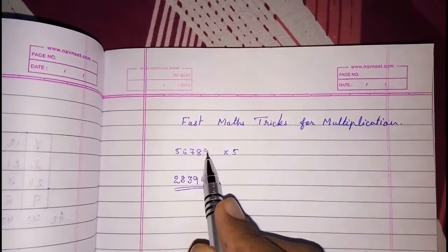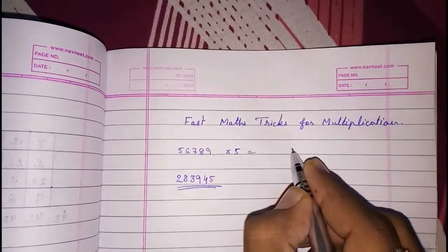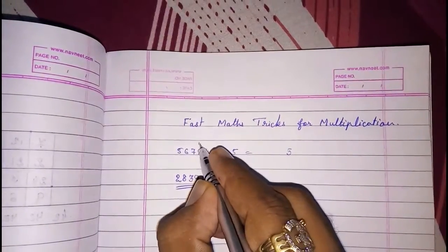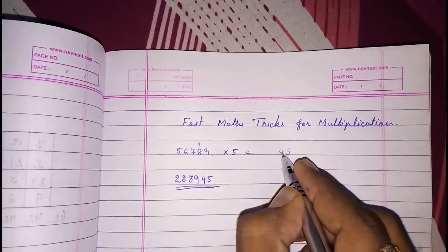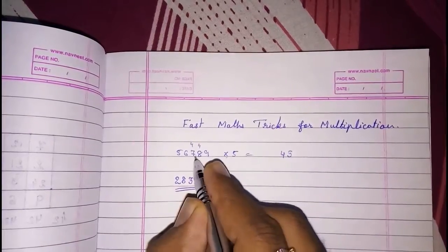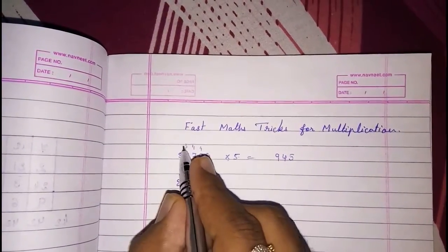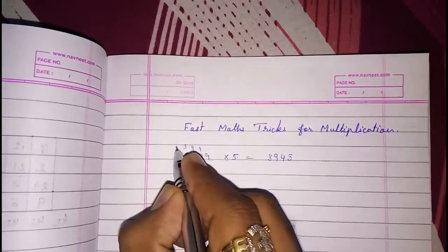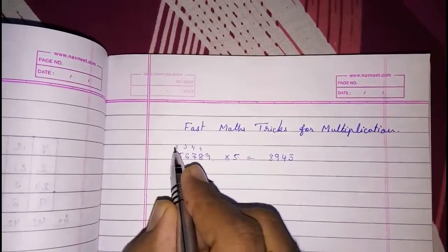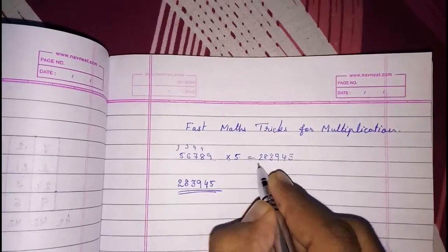How have I done this? Look here. If you multiply 9×5 is 45 carry 4, 8×5 is 40 carry 4, 7×5 is 35, 39 carry 3, 6×5 is 30, 33 carry 3, 5×5 is 25, 28. Look here, the same answer.